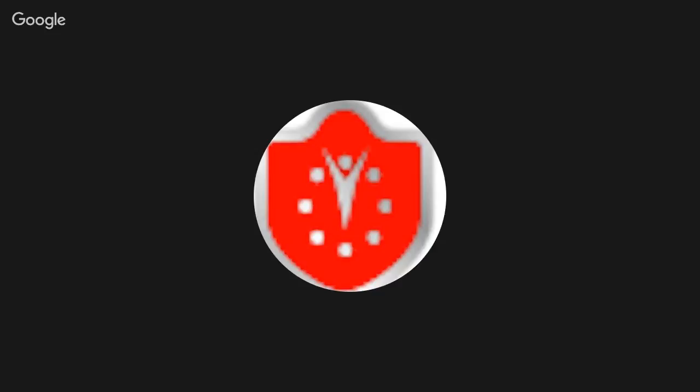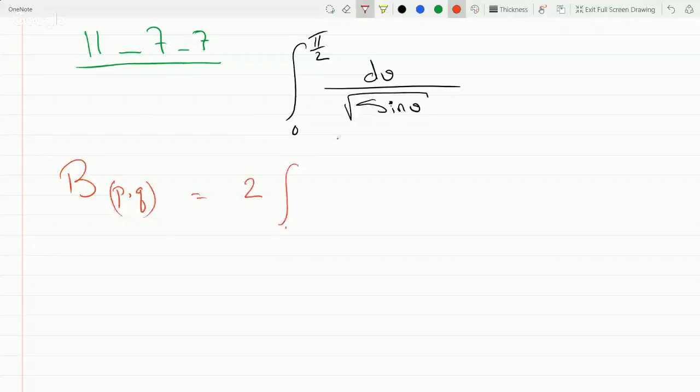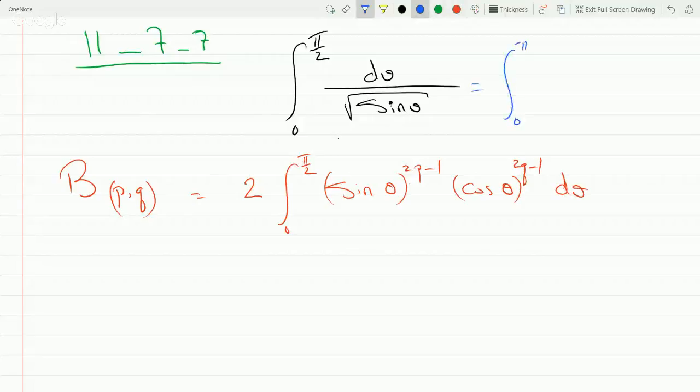Put it in that beta function form, so beta B(p,q), that's equation 6.4: 2 times the integral from 0 to pi over 2 of sine theta to the 2p minus 1 times cosine theta to the 2q minus 1 d theta. Now we can modify the top one to say the integral from 0 to pi over 2 of sine theta to the minus one half d theta.